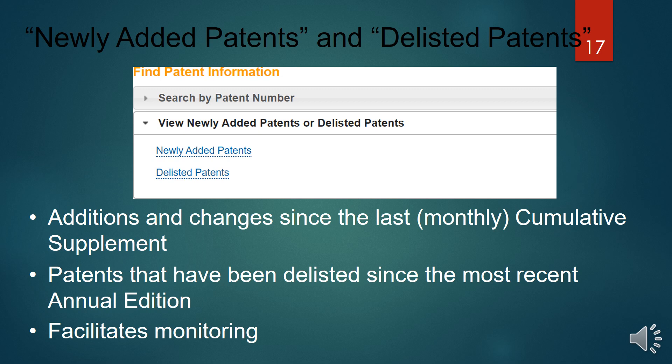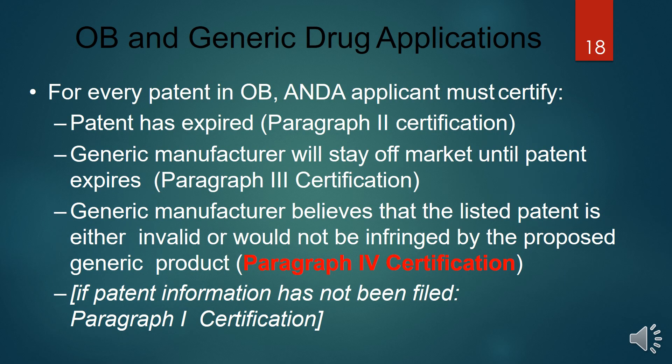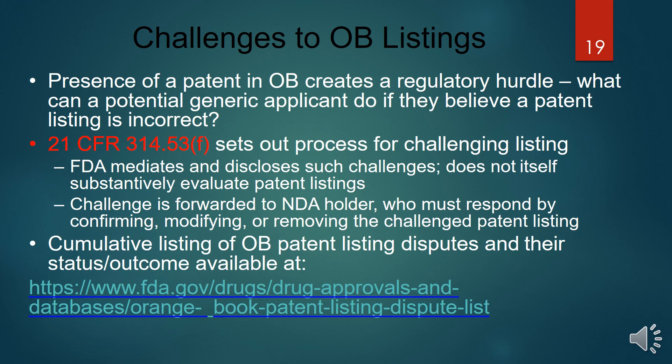The Orange Book also shows newly added patents and delisted patents, helping to facilitate monitoring and avoid issues related to new patents. It also relates to the generic drug application — different paragraph certifications are available. Paragraph II certification, Paragraph III covers the generic manufacturer timeline, and Paragraph IV covers patents that are invalid or would not be infringed.